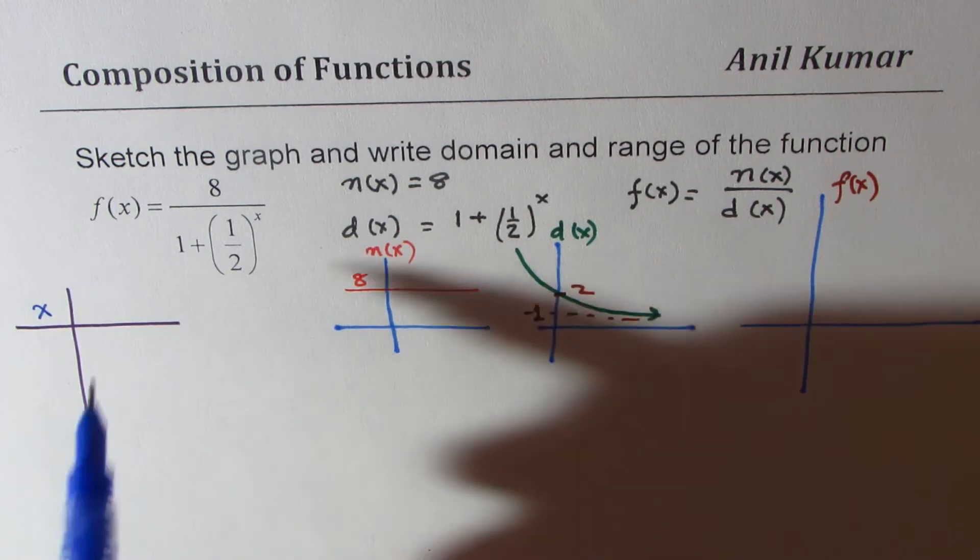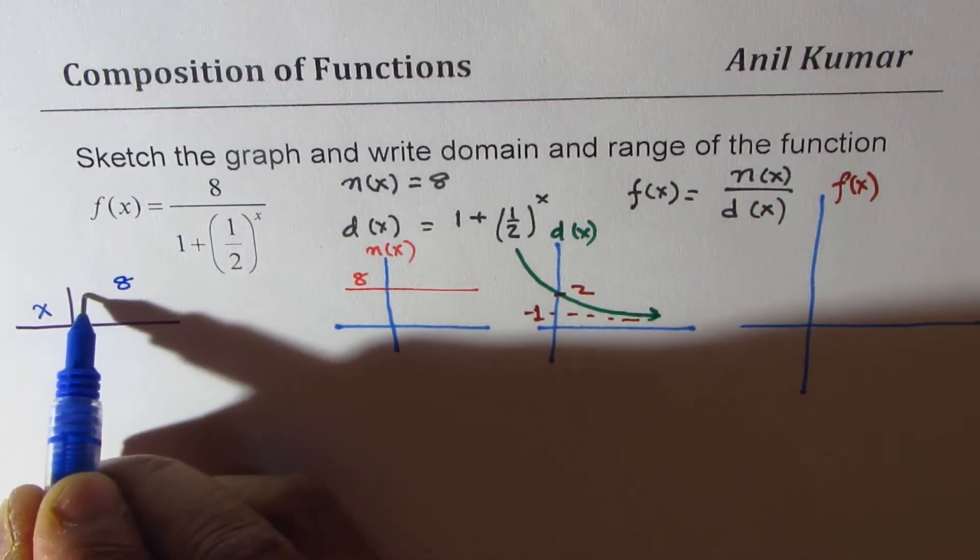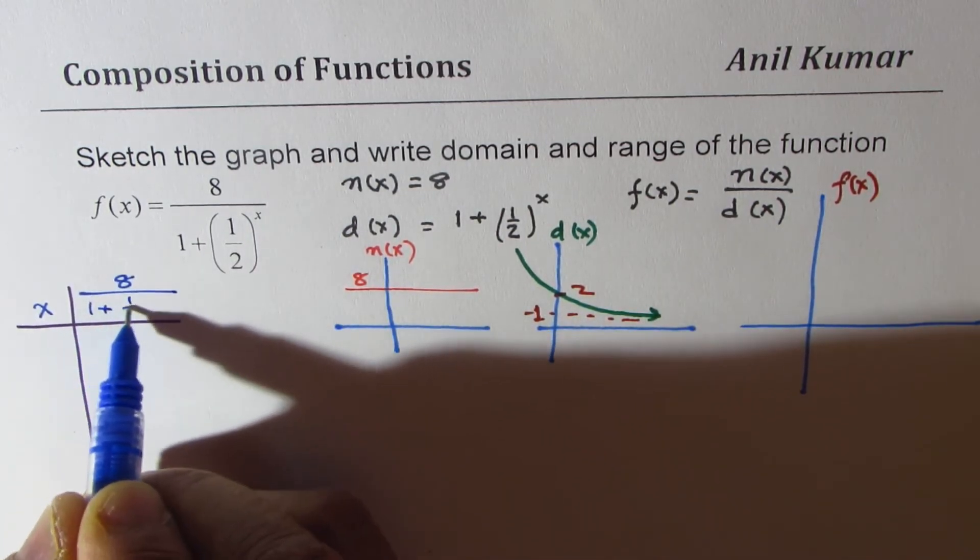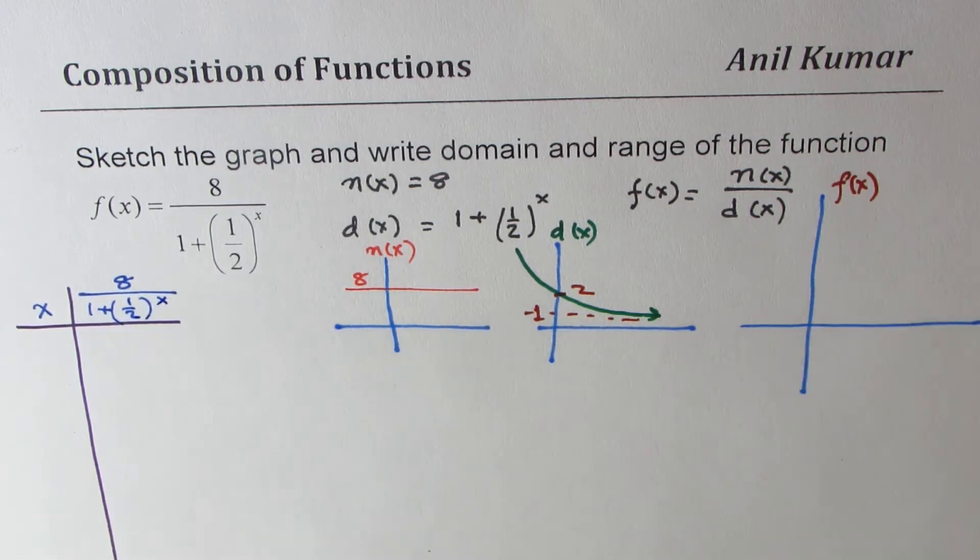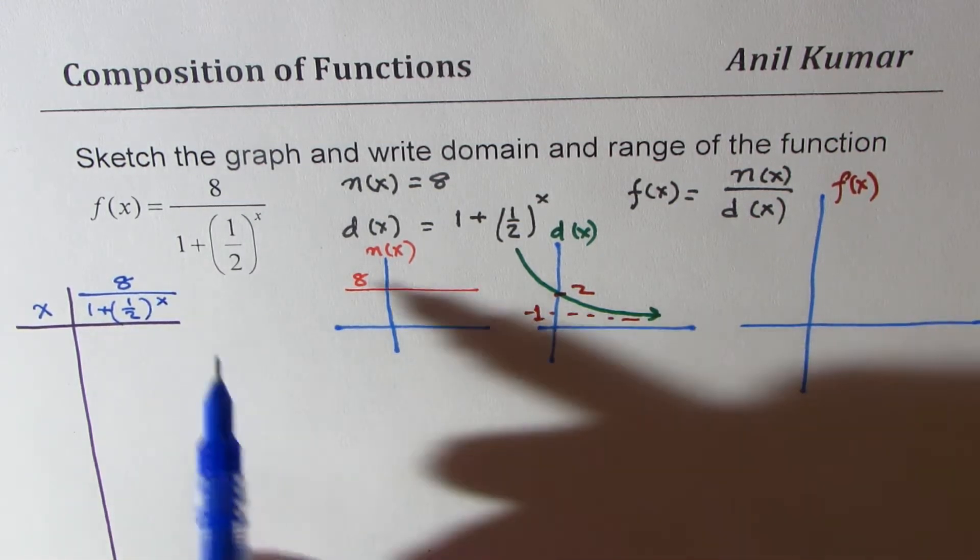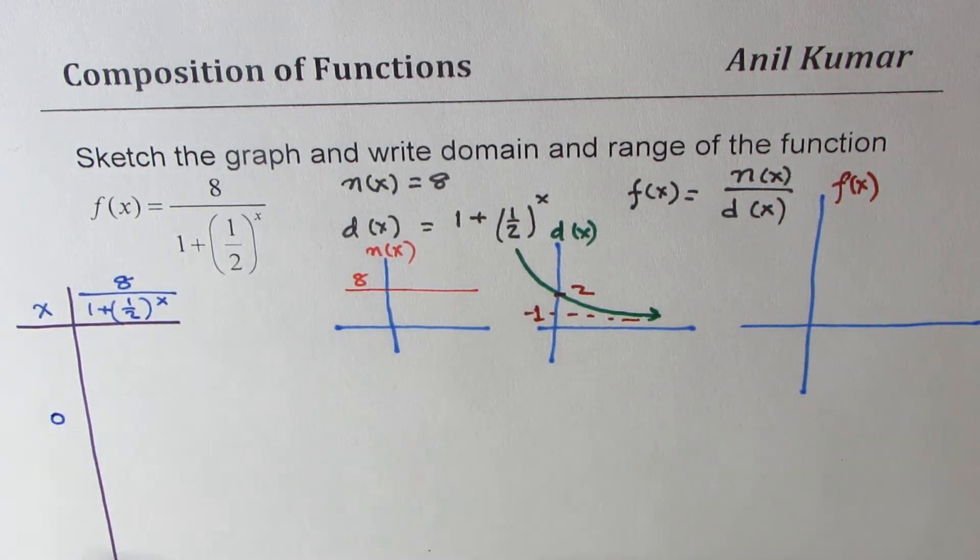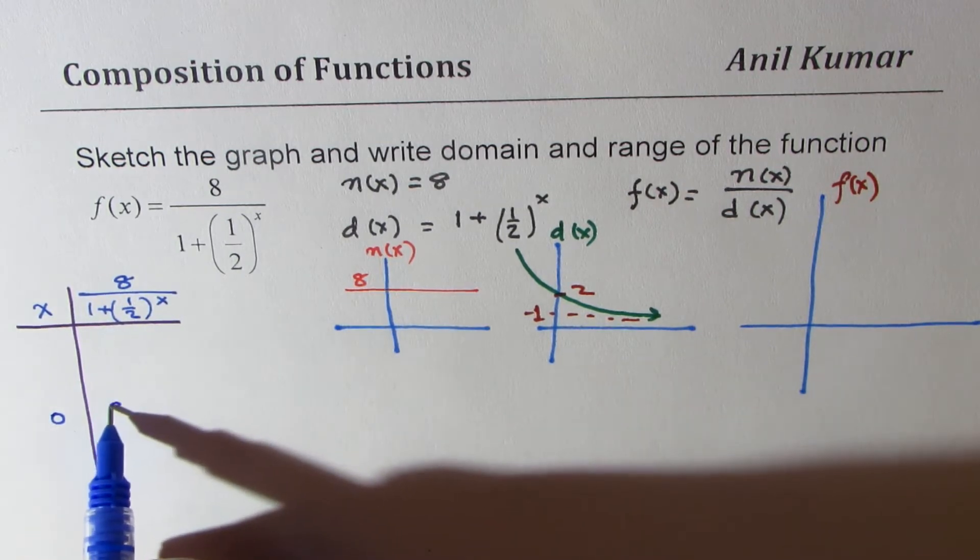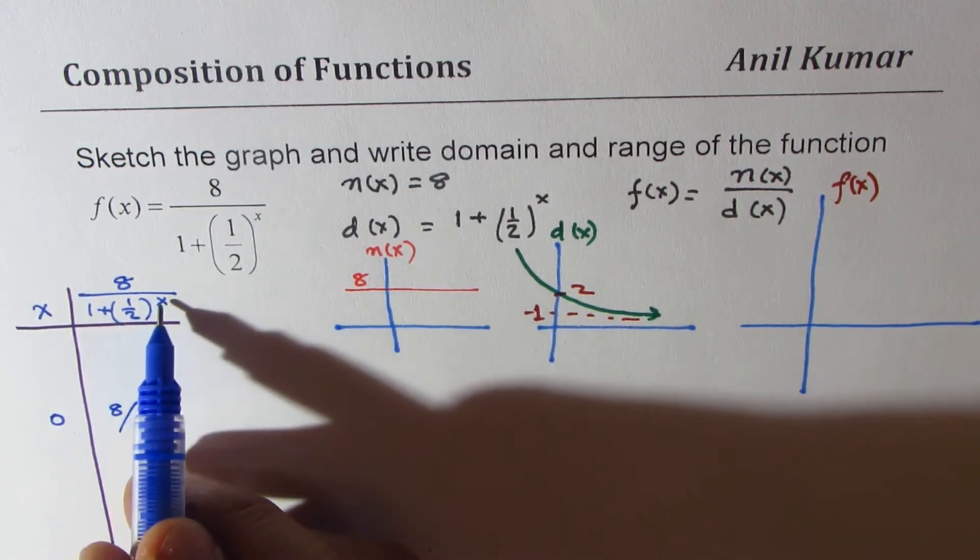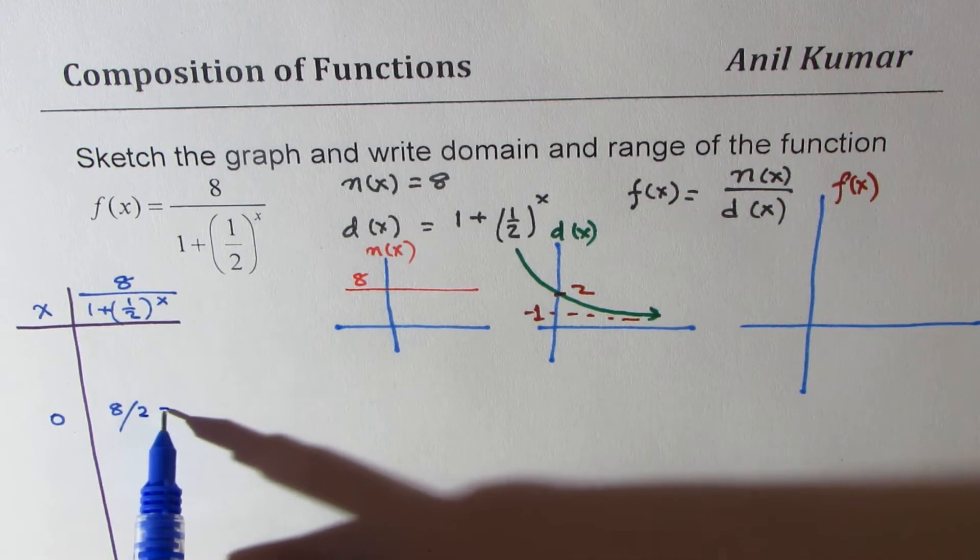Now if I take 8 divided by 1 plus half to the power of x, so if I take a value of x as 0, then it becomes 8 divided by anything to the power 0 is 1, so it gives me 4. So at 0 what we get is 4.